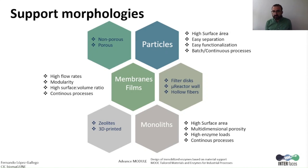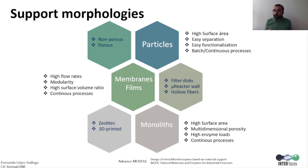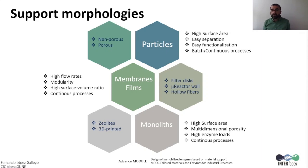In the case of membrane films, they can be filtered discs, they can be integrated into the walls of micro-reactors, or they can be formed by the deposition of whole fibers to increase the surface area. Membranes allow high flow rates. They are very modular as they can be stacked one on top of the other. They normally present a high surface-to-volume ratio, and they are mainly applied in continuous processes.